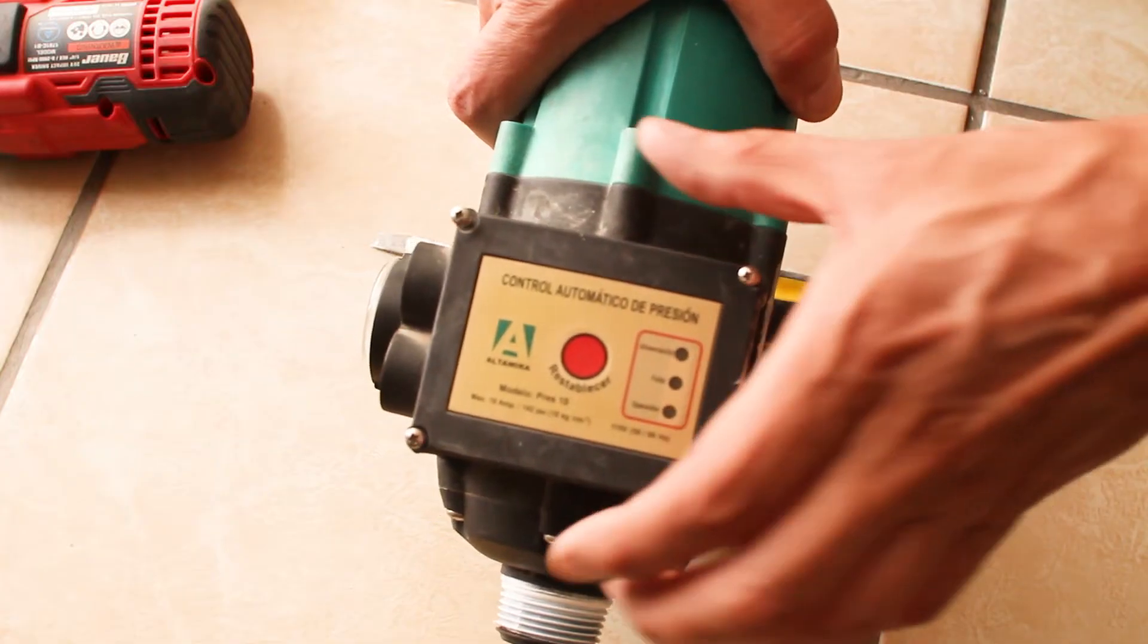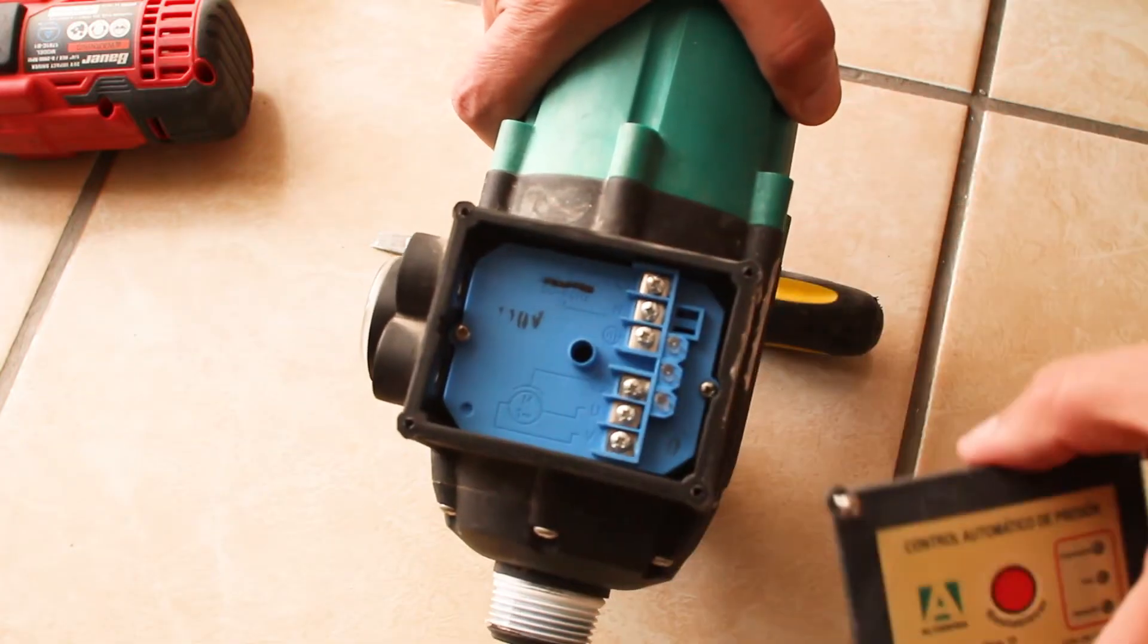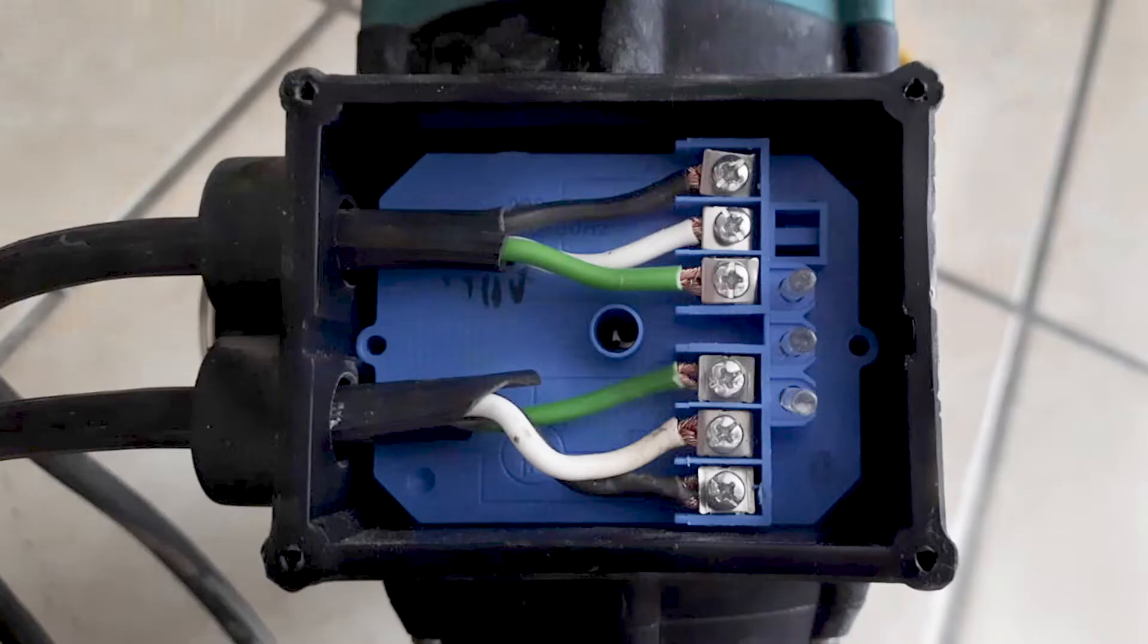Onto finding the fault inside the water pump controller. Here I have removed the four corner screws so I can release the status and reset plate. I have already disconnected the two incoming electrical cables and the six wires from the silver contacts.